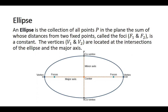An ellipse is the collection of all points P in the plane, the sum of whose distances from two fixed points, called the foci F1 and F2, is a constant. The vertices V1 and V2 are located at the intersections of the ellipse and the major axis. There are also co-vertices on the minor axis, which is perpendicular to the major axis. The key idea is that the distance created by two line segments going from one focus to a point on the ellipse and then to the other focus is always the same.